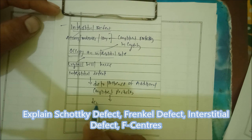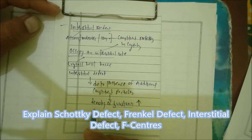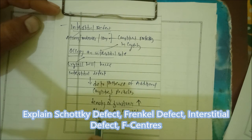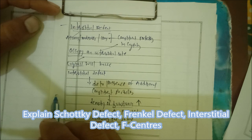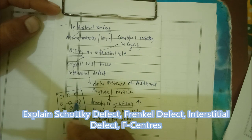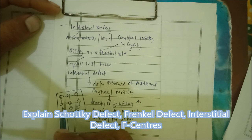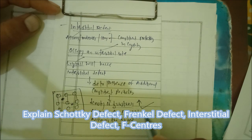The density of the substance increases in interstitial defect because mass increases but volume remains the same. Diagrammatically, the constituent particles are seen occupying the free interstitial spaces, which is why the density increases while the volume stays constant. That is what your interstitial defect is.